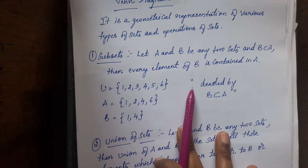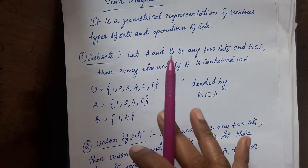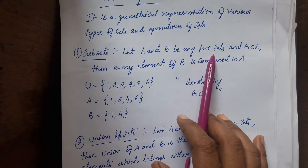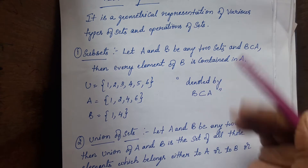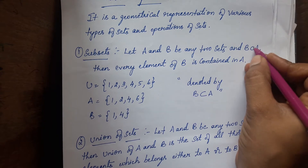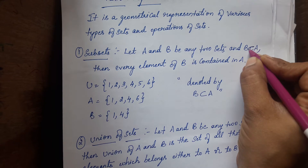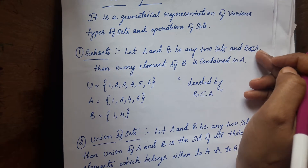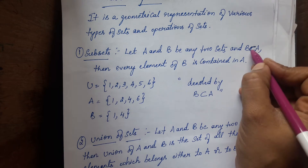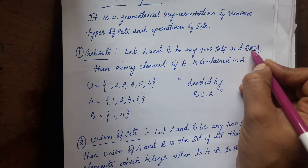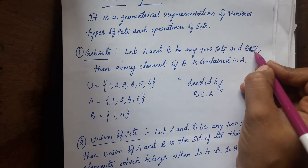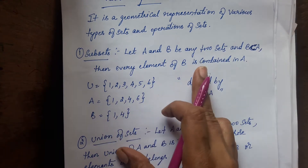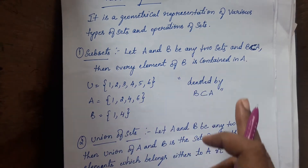Firstly, what is the meaning of subsets? Let A and B be any two sets and B is a subset of A. This is how we are going to denote the subset: B ⊆ A. B is a subset of A means every element of B is contained in A.